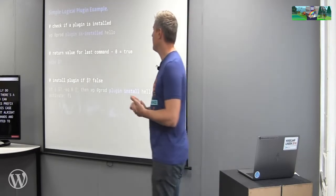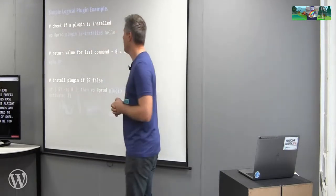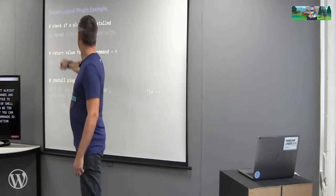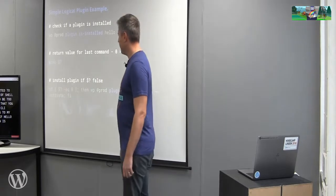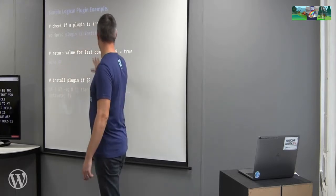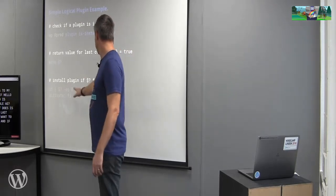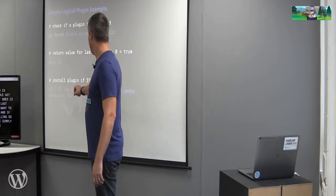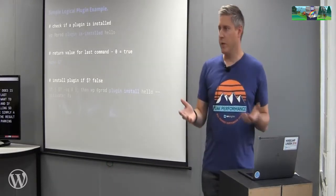I've started to mix WP CLI with a bit of shell scripting — nothing too involved, but you can add some logic into your WP CLI commands. In this case I'm going to my production server and checking if 'Hello Dolly' is installed using 'plugin is-installed'. Bash has a variable — the question mark variable — which gives me the value for the last command. If the plugin is not installed, and the result is not equal to zero, go ahead and install it. It's quite simply an if/then statement.